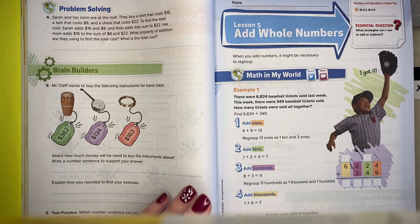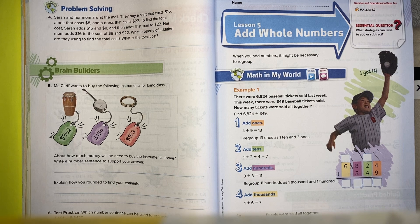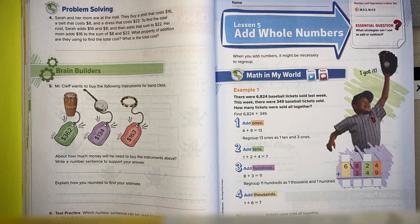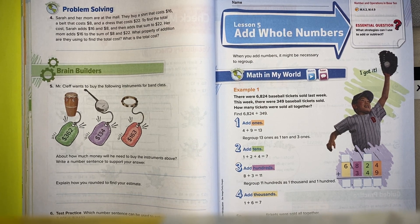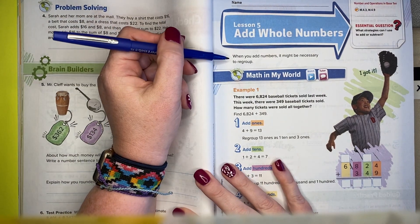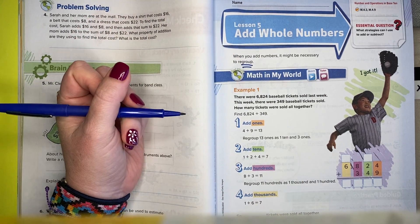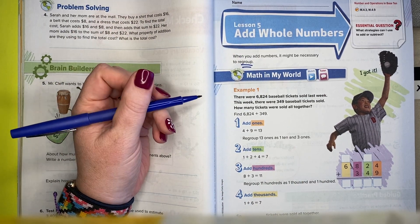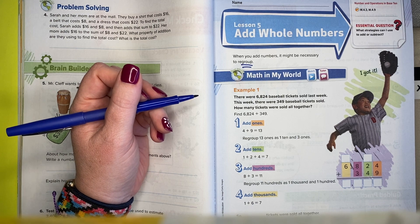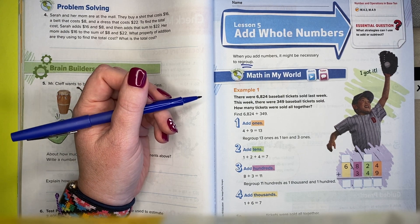It's time for lesson five and today we are rounding whole numbers. Honestly, I feel like this will probably just be a review for you, so we should be able to get through it pretty quickly. When we add whole numbers, it might be necessary to regroup, and that's what we're focusing on today. But I bet you guys already know how to do this. All right, let's just get right into it.